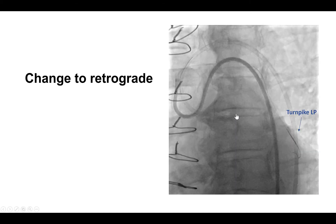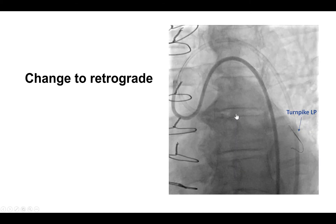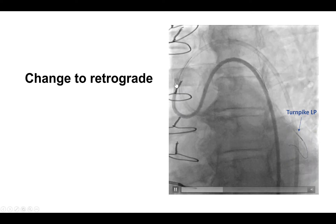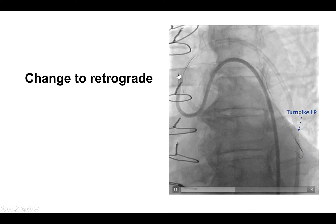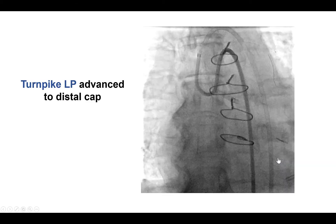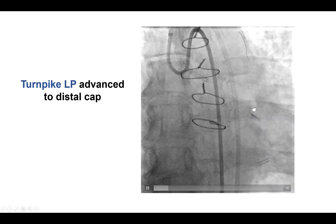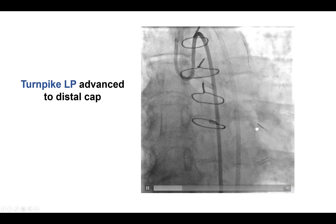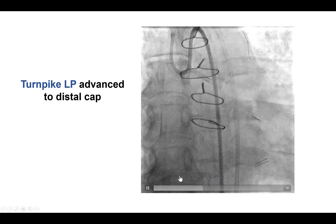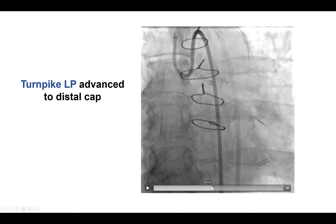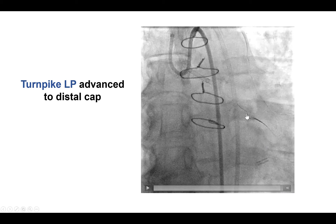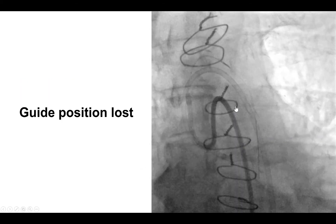After this, we decided to switch to retrograde. We were using an 8 French AL-1 guide catheter into the radial graft, and advanced a Turnpike LP microcatheter down to the distal anastomosis, then did retrograde wire escalation through the Turnpike LP. There was a clear distal cap, and the wire initially went easily more proximal.